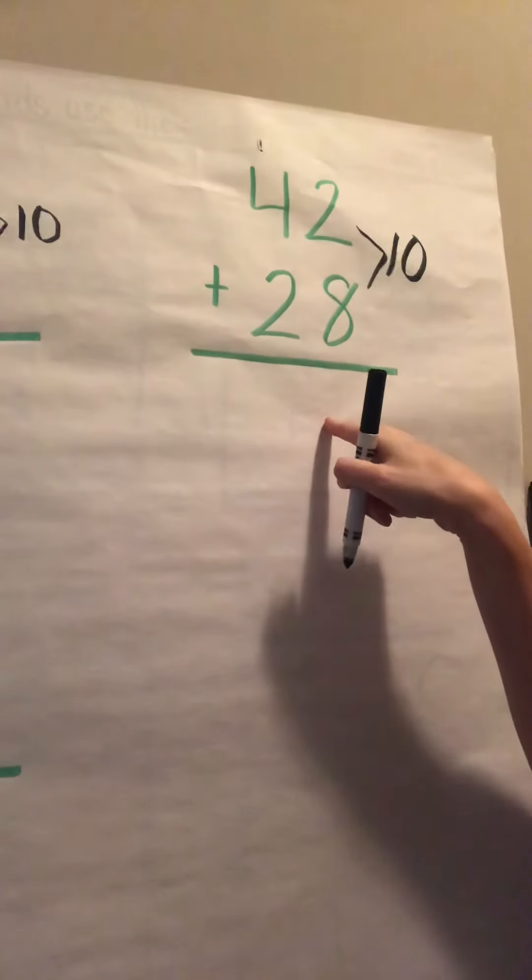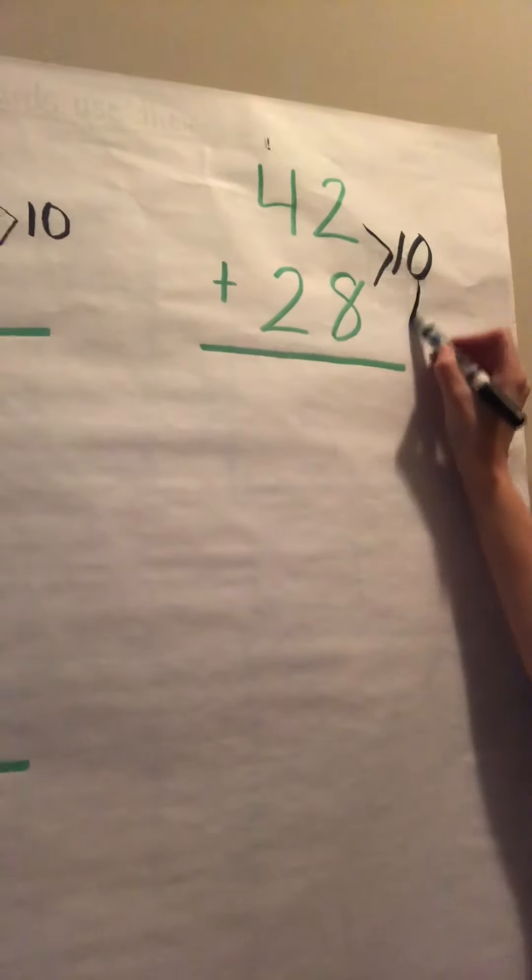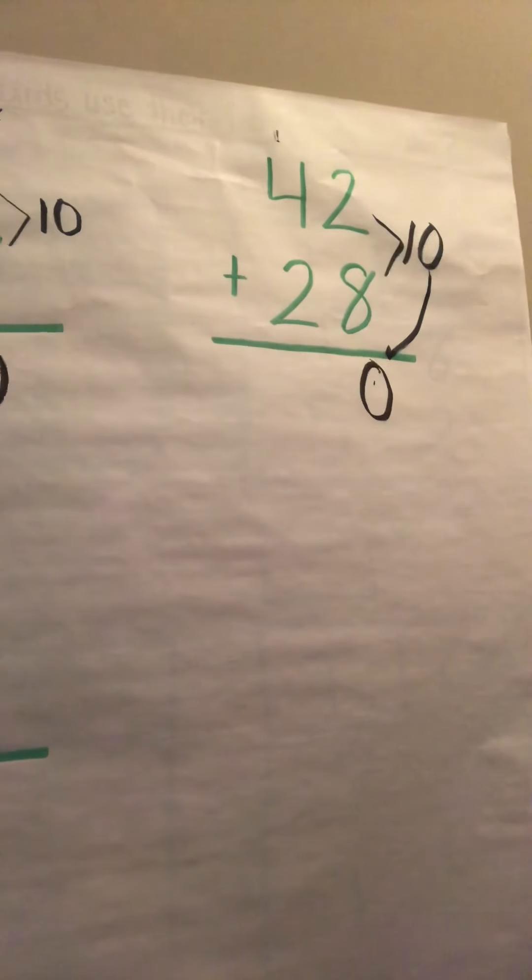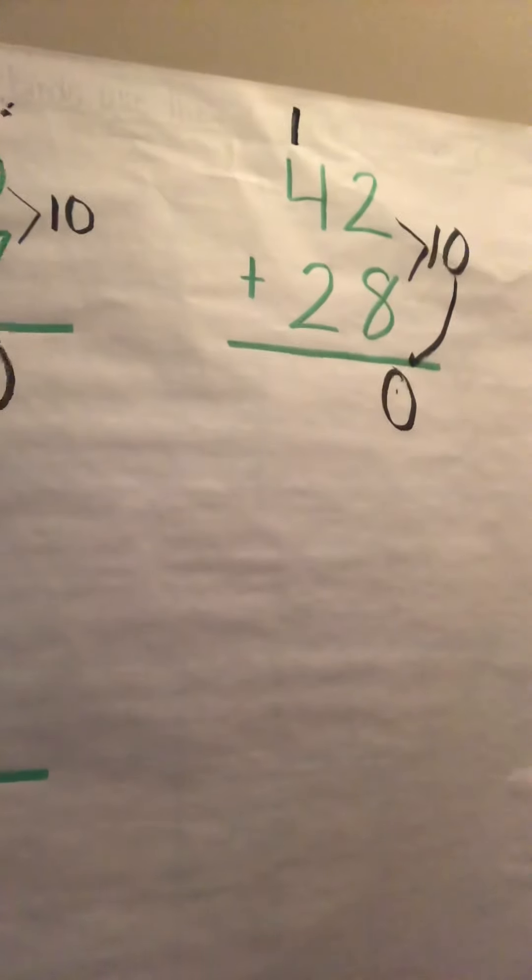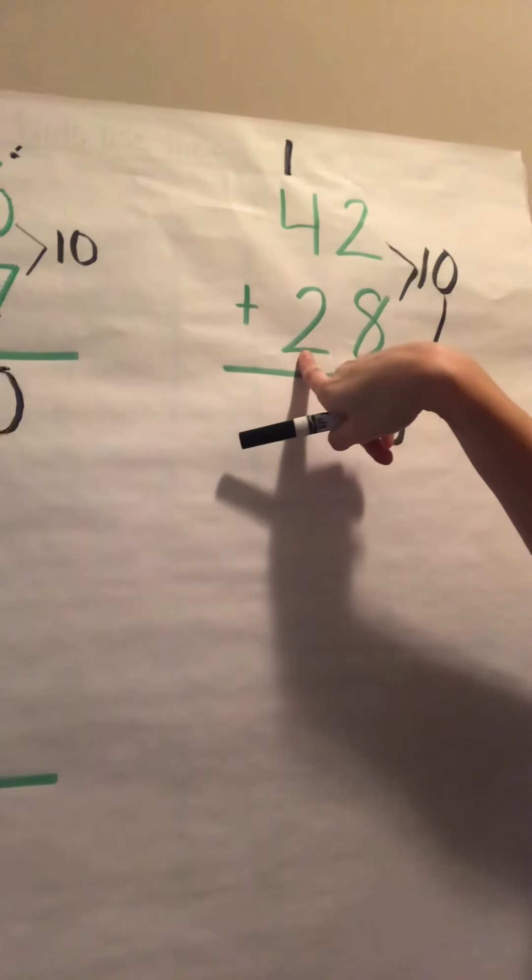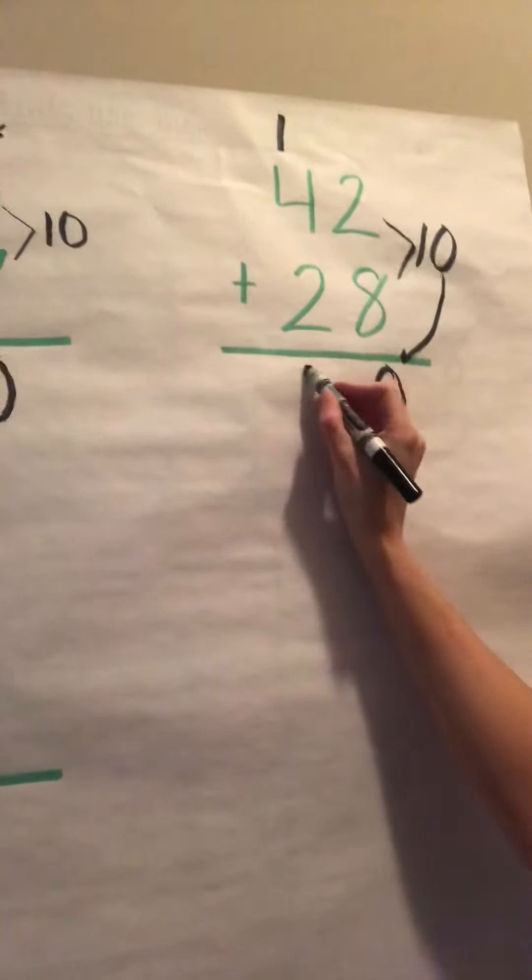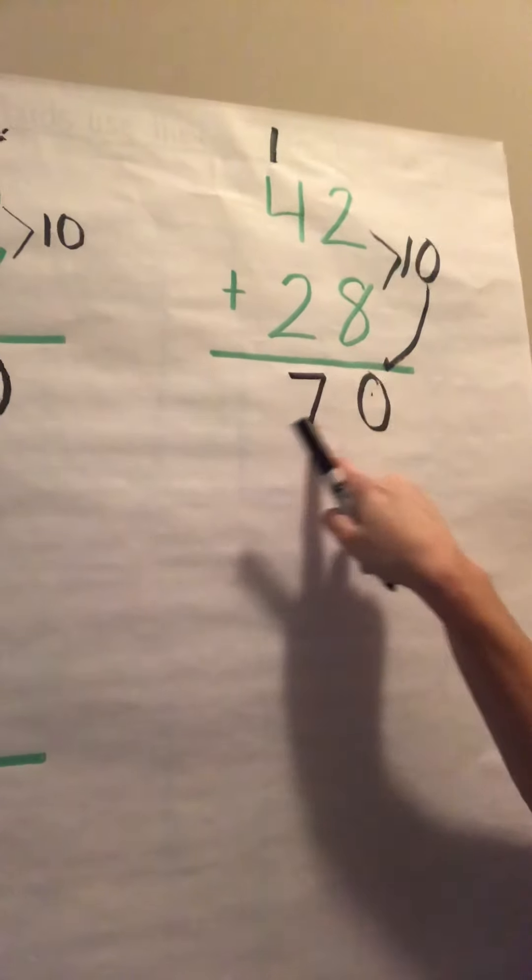And which one, what number do I put below? Right, I put the 0 because it's in the ones place. And where do I put my 1? Right, I carry it on top over my tens place. So now we have 4 plus 2 equals what? 6 plus our 1 more. And 7. So we have 42 plus 28 equals 70.